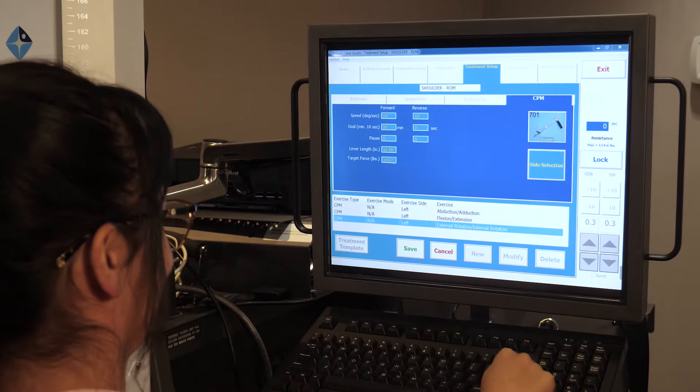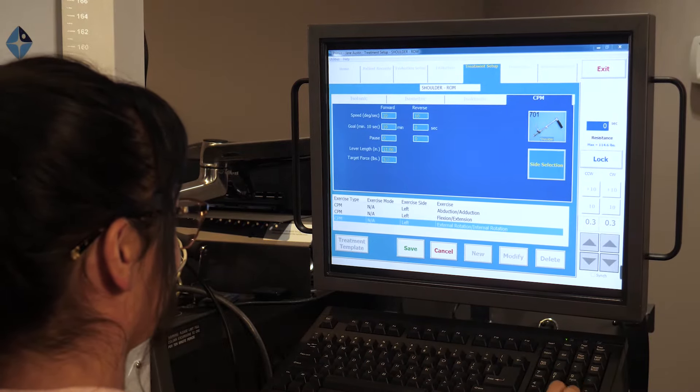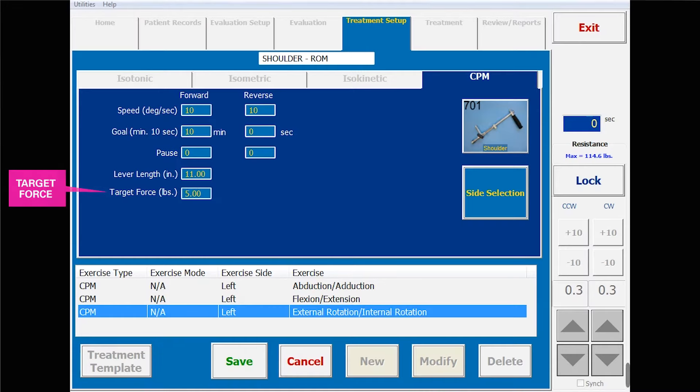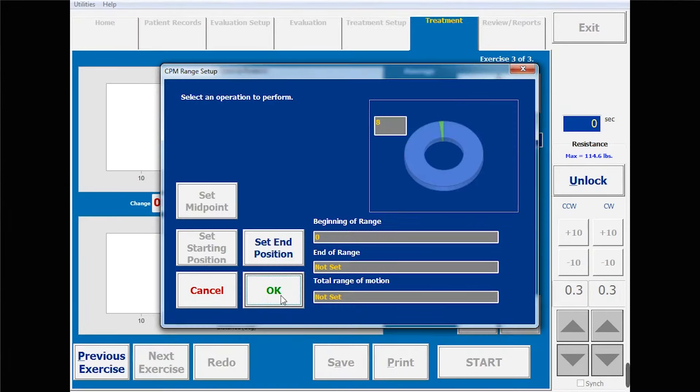So before we start exercising, we're going to define the target force after proper dosing, and we'll set the speed and the client's current range of motion. Now we're ready to start CPM with target force.